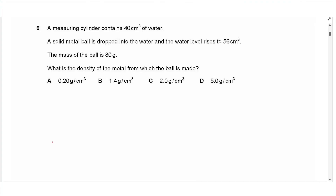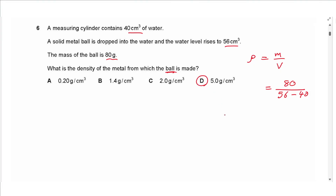Question 6: A measuring cylinder contains 40 cm³ of water. A solid metal ball is dropped in and the water level rises to 56 cm³. The mass of the ball is 80 grams. Density = mass ÷ volume = 80 ÷ (56 − 40) = 80 ÷ 16 = 5 g/cm³. Answer is D.